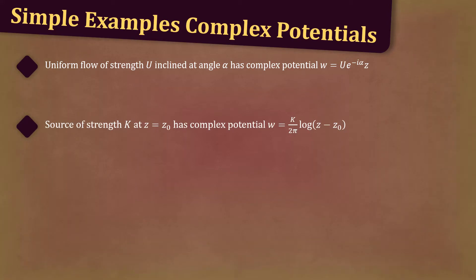A source of strength K at z = z₀ has complex potential w = (K/2π)log(z - z₀).